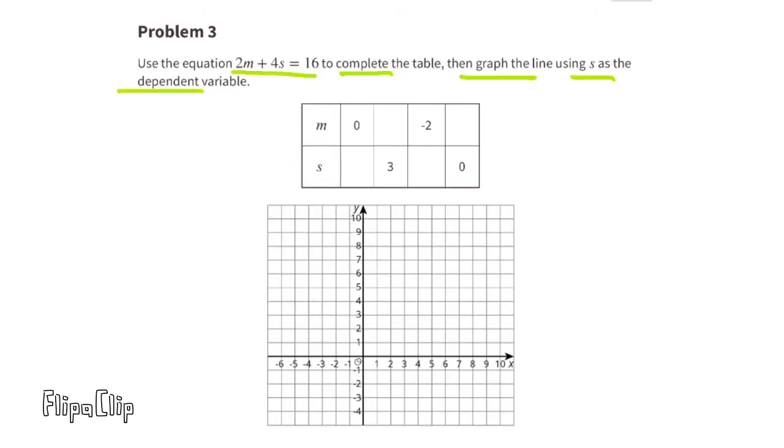Problem number 3. Use the equation 2M plus 4S equals 16 to complete the table. Then, graph the line using S as the dependent variable. Let's start with the equation 2M plus 4S equals 16. Let's look at the table where the value for M is 0. We can substitute the M with a 0. Therefore, 2 times 0 plus 4S equals 16. That's the same as 0 plus 4S equals 16, or just 4S equals 16. Next, we have to divide both sides by 4. 4S divided by 4 is 1S, and 16 divided by 4 equals 4. So now we know when the value for M is 0, the value for S is 4.